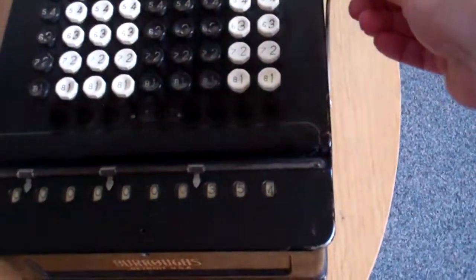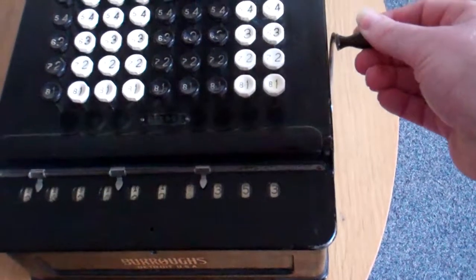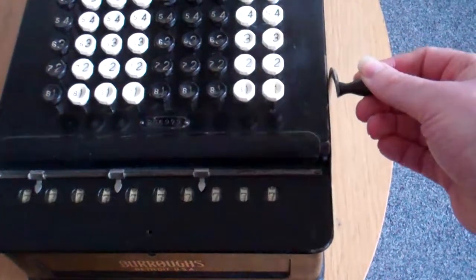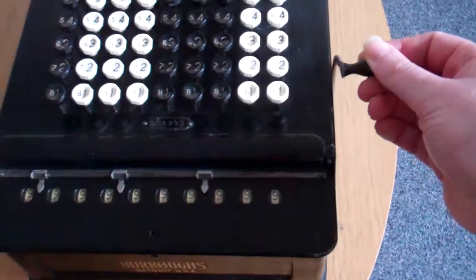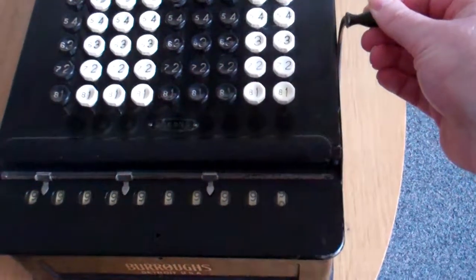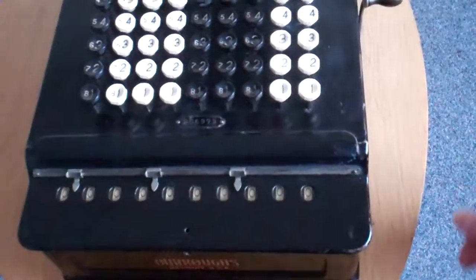The clearing mechanism moves all the numbers up to nine, and then when you release it, it adds one extra to make it overflow to zero.